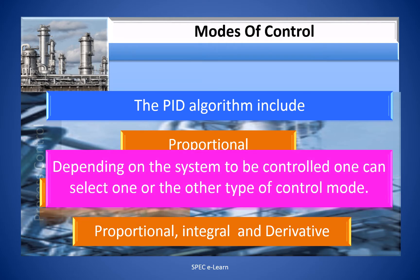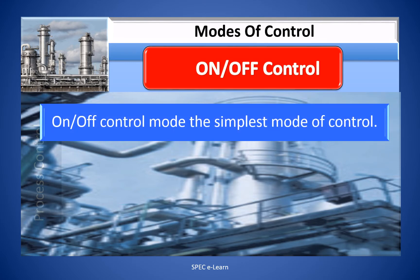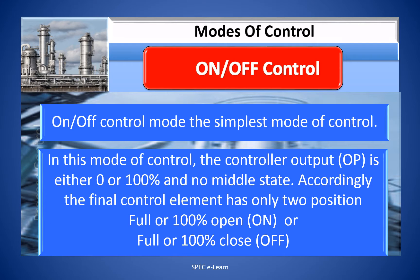Depending on the system to be controlled, one can select one or the other type of control mode. On-off control mode is the simplest mode of control. In this mode, the control output (OP) is either 0 or 100% with no middle state. Accordingly, the final control element has only two positions: full or 100% open, that is ON, or full or 100% closed, that is OFF.